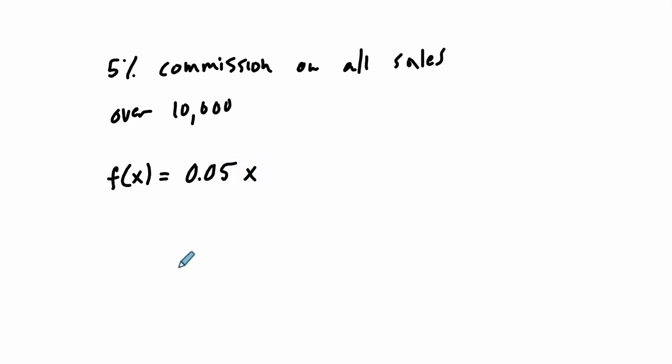Suppose you work at a store and you're getting a salary, everything's going great, you get 5% commission on sales. Commission on all sales over, let's say a certain amount, all sales over $10,000. So if I wrote a function for my commission as a percentage of my sales, it would be 0.05, 5% times the sales. If I wanted to write a function that tells me how much have I sold over $10,000, it would be all of my sales minus $10,000.